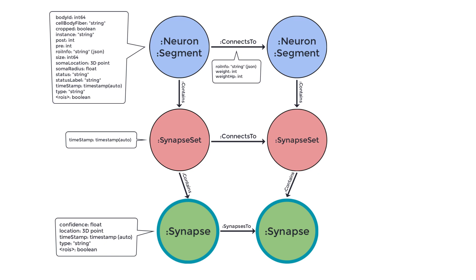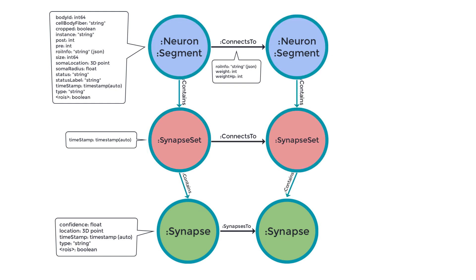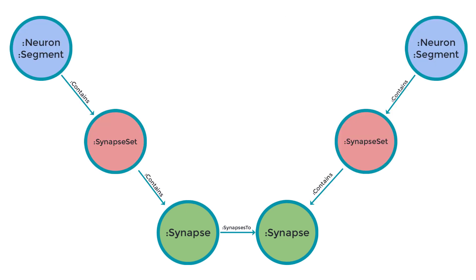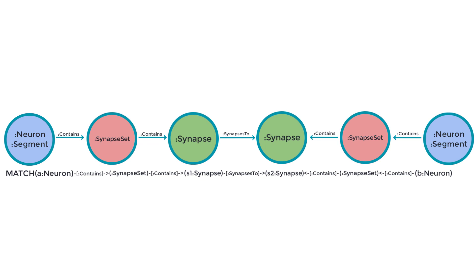The green nodes are synapse nodes. Each synapse node contains a single synapse. Each synapse is stored inside a synapse set node. Here again, we find a pathway to connect one neuron to another. And again, we can make this pathway a match statement by turning it into text and adding match at the beginning.